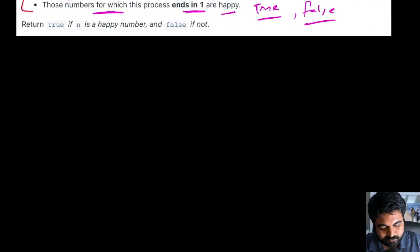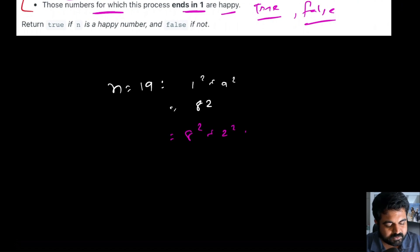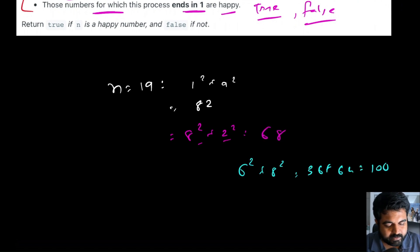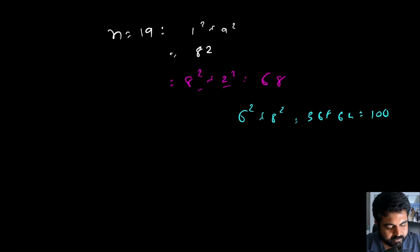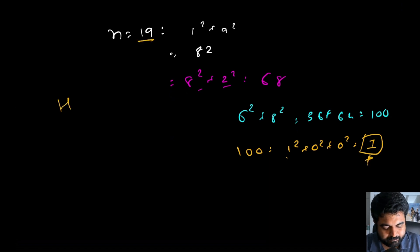Suppose the given number n is equal to 19. We compute 1 squared plus 9 squared, which is 1 plus 81 = 82. For 82, that's 64 plus 4 = 68. For 68, the total is 100. For 100, it's 1 squared plus 0 squared plus 0 squared, which becomes 1. Since we find the value to be 1, we can define 19 as a happy number and return true.